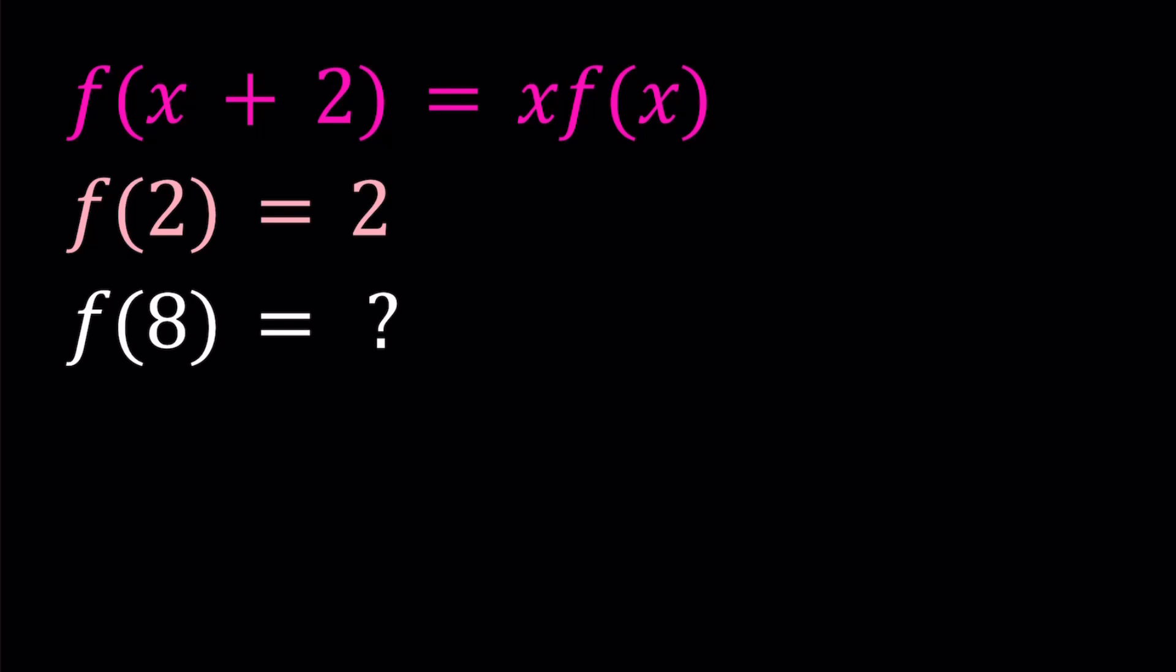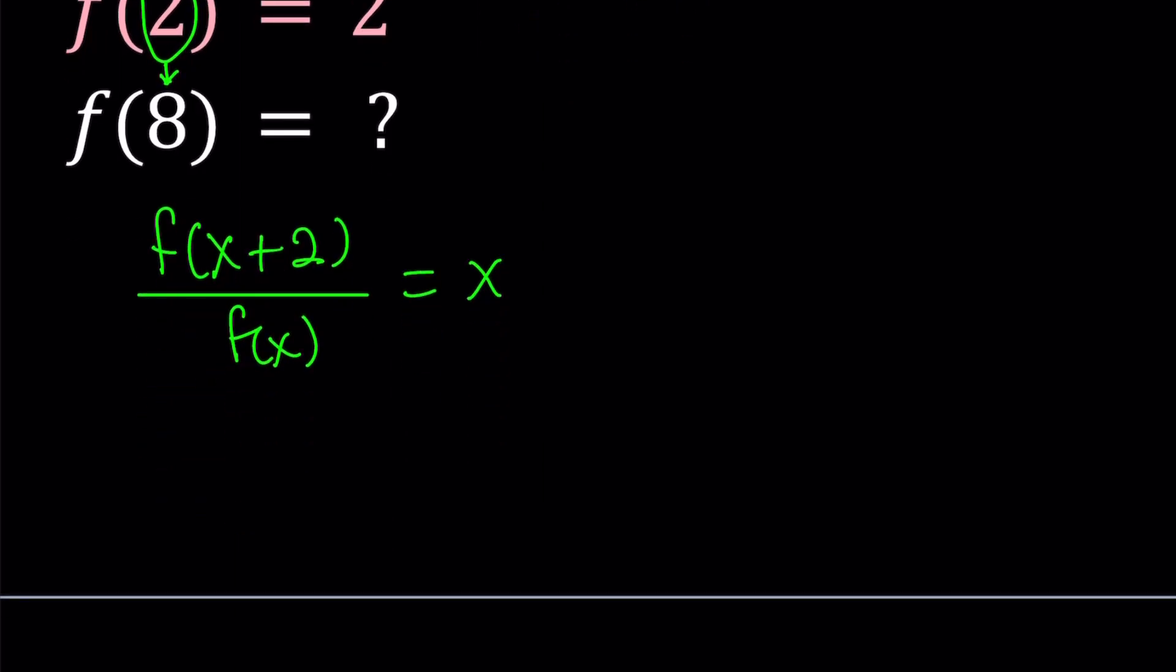x and x+2 differ by 2, and 2 and 8 differ by 6. So that kind of tells me that I need to take a couple steps to go from 2 to 8 in terms of x. So I start with this, and I need to go to 8. And every time the increment is 2. Now, instead of writing the functional equation this way, let's go ahead and write it in the following way: f(x+2) divided by f(x) equals x. Now this will be a little better because this is actually going to allow me to manipulate the expression faster. So here's what I'm going to do.